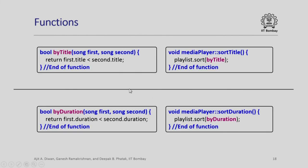The remaining functions are very straightforward. For sorting by title, I use playlist dot sort with a comparator by title, which compares first dot title less than second dot title. Exactly the same sorting is implemented for sort by duration, where by duration implements the same logic for the duration field instead.